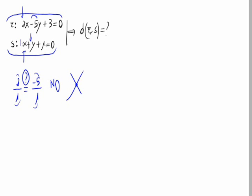So, as there's a common point between these two straight lines, the distance between these two straight lines is zero.